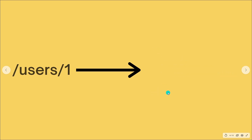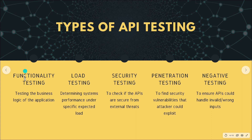Let's look at the different types of API testing. The first is functionality testing — testing the business logic of the application. For example, if I make an API call to my sign-up route, I expect it to create a new user and provide the details of that new user in the response. This is testing the core functionality of the application.